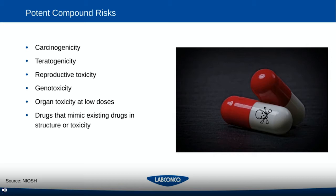The components that make up OEB banding include carcinogenicity, teratogenicity, reproductive toxicity, genotoxicity, organ toxicity especially at low doses, and drugs that mimic existing drugs. A drug that is structurally similar to a known compound can have similar properties to a known OEB or OEL, giving us a good jumping-off point to put engineering measures in place to make sure workers are protected when handling these substances.